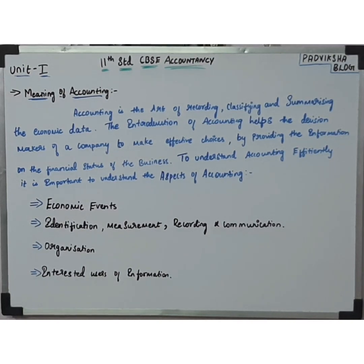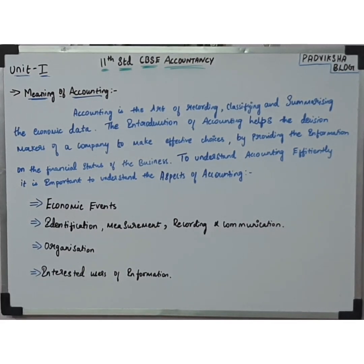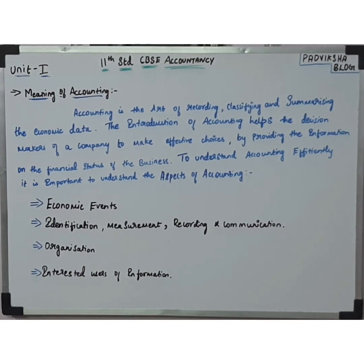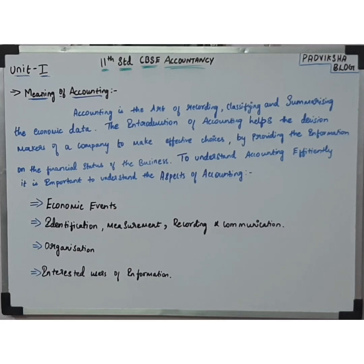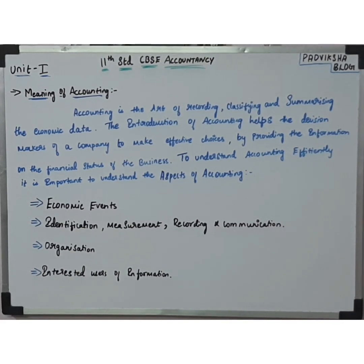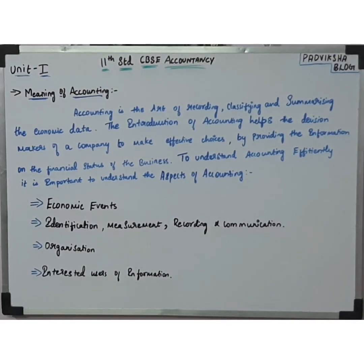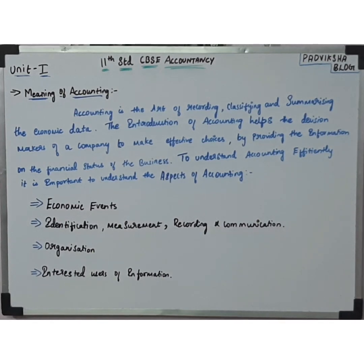Accounting is the art of recording, classifying, and summarizing the economic data. So accounting means recording transactions - recording, classifying (debit and credit), and summarizing. Summarizing means how much money is there - summarizing the economic data, which means money transactions like cash, card, or credit check. So we record, classify, and summarize the money transactions - that one word meaning is accounting.